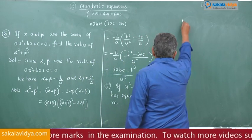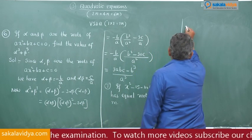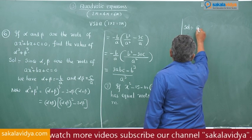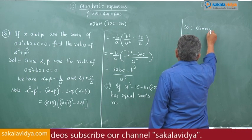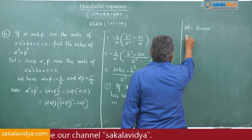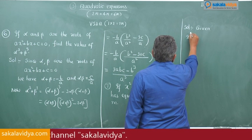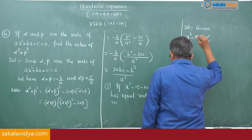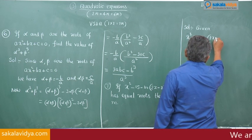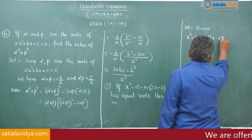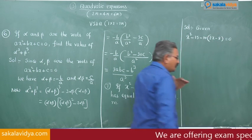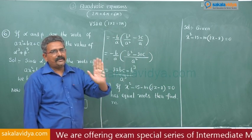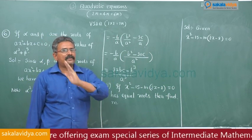Solution: given x squared minus 15 minus m times 2x minus 8 is equal to 0. The first and foremost thing is we have to put it in the form of ax squared plus bx plus c is equal to 0.